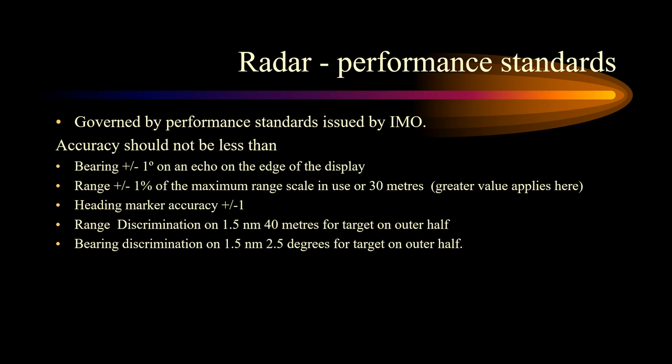The heading marker accuracy should be about plus or minus 1 degree. The heading marker switch must revert to on status. The radars must be gyro-stabilized. The equipment must be operated satisfactorily in wind speeds up to 100 knots. It must be fitted with a performance monitor. On ships over 1,600 gross tonnage constructed after 1st September 1984, it must be fitted with the facility for plotting targets at least as effective as a reflection plotter.